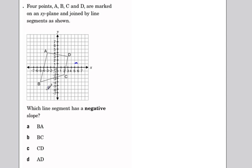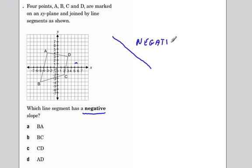We're asked which of these line segments has negative slope. Remember that negative slope means that the line goes down to the right. So, a line that goes down to the right has negative slope. And the only line segment that actually goes down to the right is this one, AD. So, the answer is D.